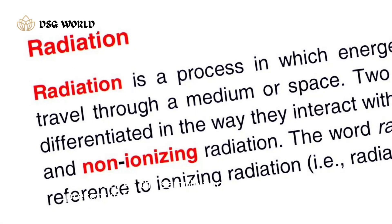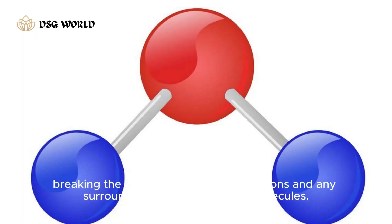Atomization. As the sample vaporizes, the metal ions present in the sample are converted into atoms. This process, known as atomization or desolvation, involves breaking the bonds between the metal ions and any surrounding ligands or solvent molecules.